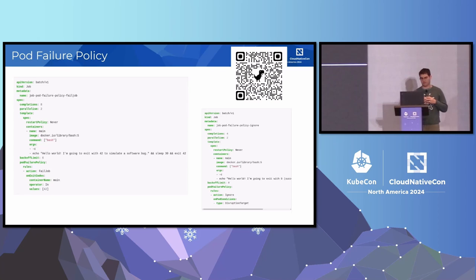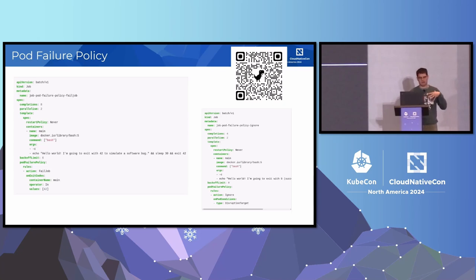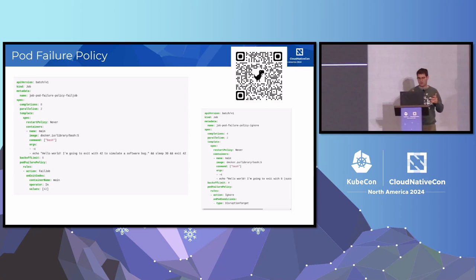An interesting counterpoint is: how can you not decrement the retry count if you have an infrastructure issue like your workload was preempted? You shouldn't be penalized - that was the cloud vendor preempting you, so why should the job fail? That's another use case for pod failure policy. When stuff is preempted or similar disruptions occur, there's a special condition called disruption target that you can use to not fail your jobs.